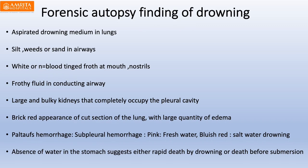Forensic autopsy findings in drowning include: aspiration of the drowning medium in lungs, weeds or sand in airways, white or blood-tinged froth at the mouth or nostrils, frothy fluid in conducting airways, large bulky lungs completely occupying the pleural cavity, brick-red appearance of cut lung section with large quantity of edema, and Paltauf hemorrhages — sub-pleural hemorrhages. Pink lungs are seen in fresh water drowning, bluish-red in salt water. Absence of water in the stomach suggests either rapid death by drowning or death before submersion.